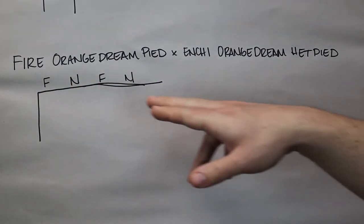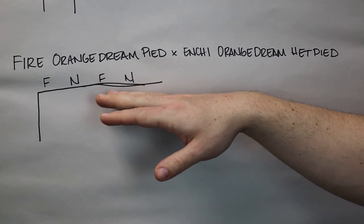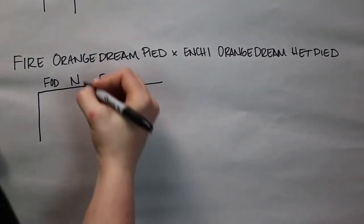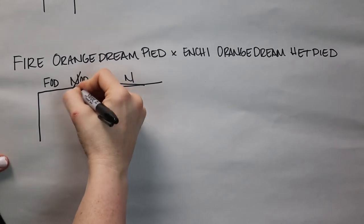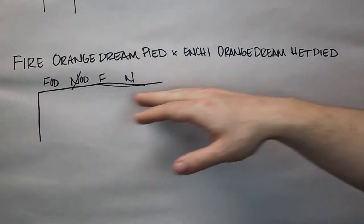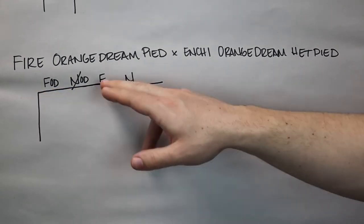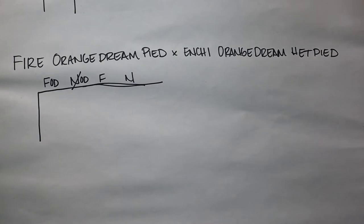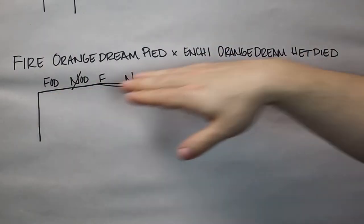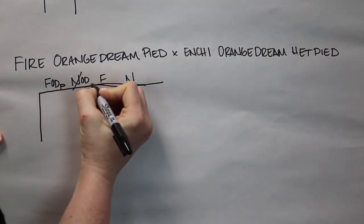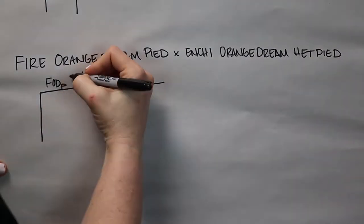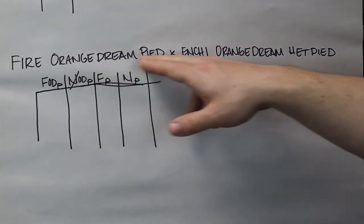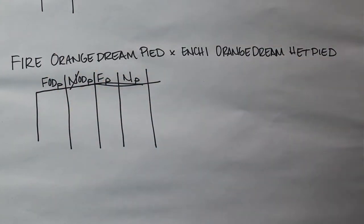Put orange dream next to that 'F' — 'OD' — and orange dream next to that 'N,' then cross out the 'N' because it's no longer normal if it's orange dream. So now we have four options: you can either get a fire orange dream, just an orange dream, just a fire, or a normal. Then a visual pied — if you breed that to a normal, everything is going to be het pied. So everything gets het pied; put a small 'p' on all of them and put in your lines.